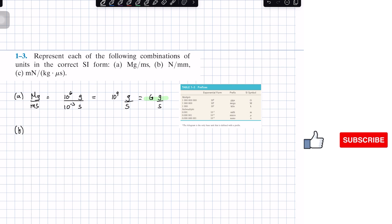We're going to go ahead with problem B. Here we have Newton over millimeter. The Newton doesn't have a prefix, so it stays as Newton. The millimeter is 10 to the negative 3 meters. To simplify this, we move the 10 to the negative 3 above, but because we're moving it, that becomes positive, giving us 10 to the positive 3 Newton over meter.